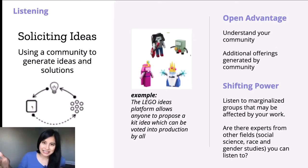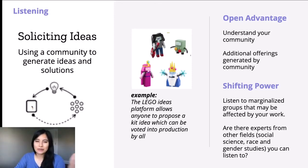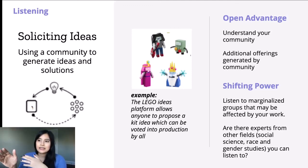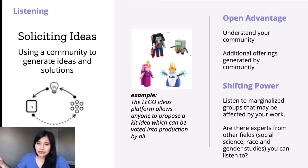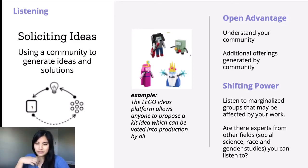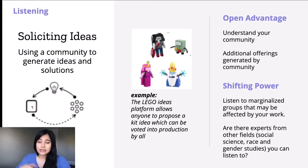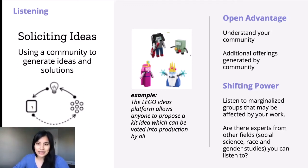Next is soliciting ideas — we're in the listening section. This is using a community to generate ideas and solutions. There's a Lego Ideas platform that allows anyone to propose a kit idea, which can then be voted into production. The open advantage is it helps you understand your community and generate additional offerings. In terms of shifting power, can you solicit ideas specifically from marginalized groups that may be affected by your work? Are there experts from other fields — like social science or race and gender studies — that you can listen to? A lot of times when we're building responsible tech, we're not listening to people who've been studying this for a long time.